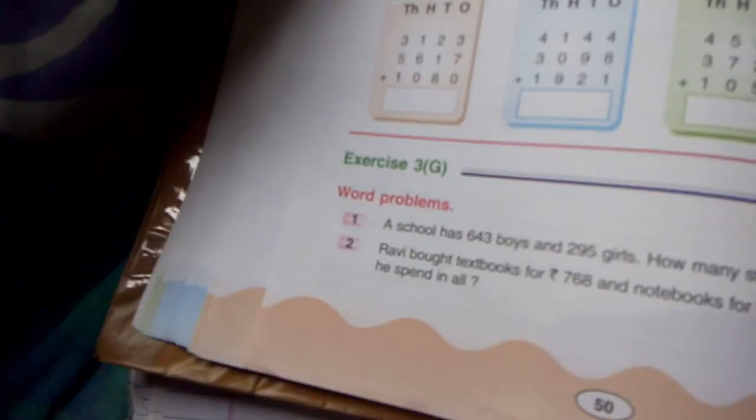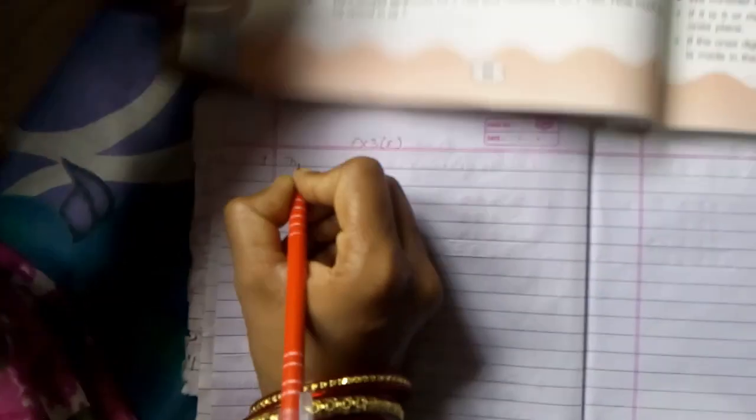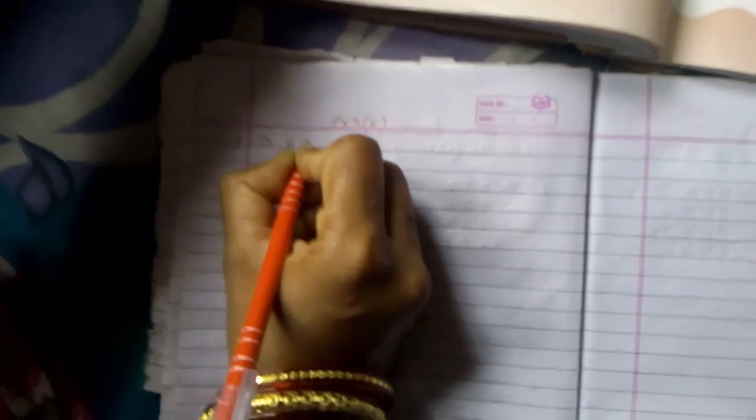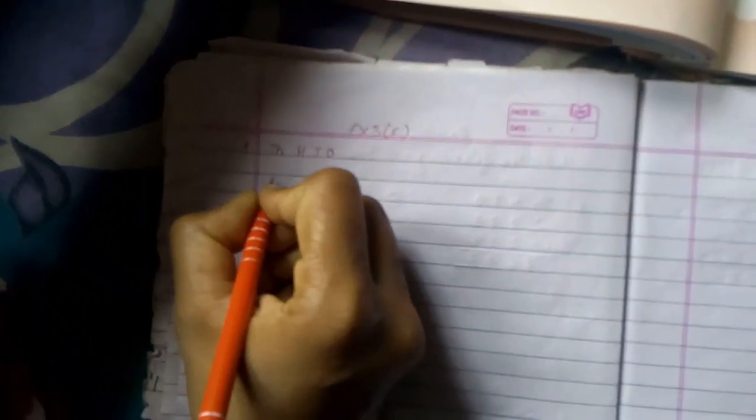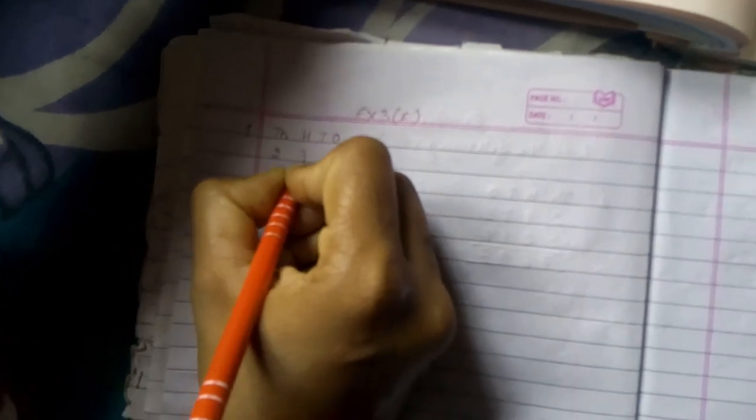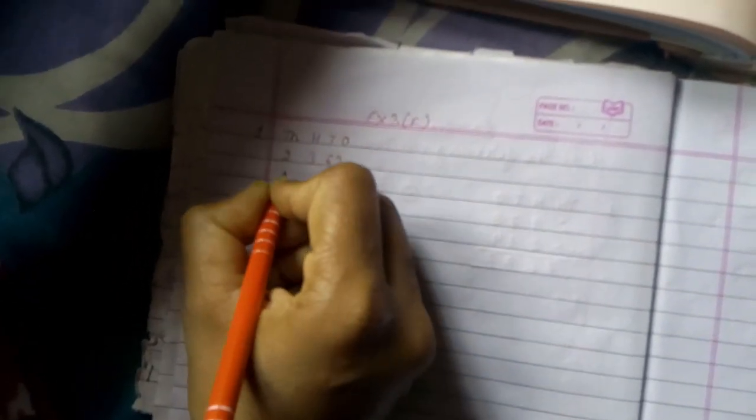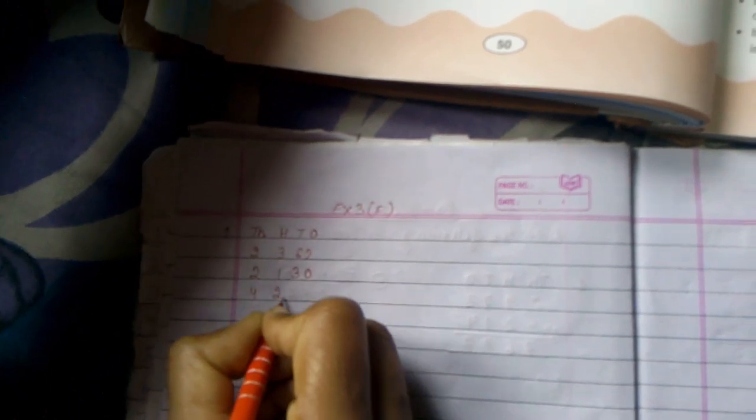How you can do in your copy. So let us see how we can do in our copy. So you will write exercise 3F, question number 1. So same process. TH for 1000, H for 100, T for 10, and O for 1. So we will copy down the number: 2362, then 2130, 4210.